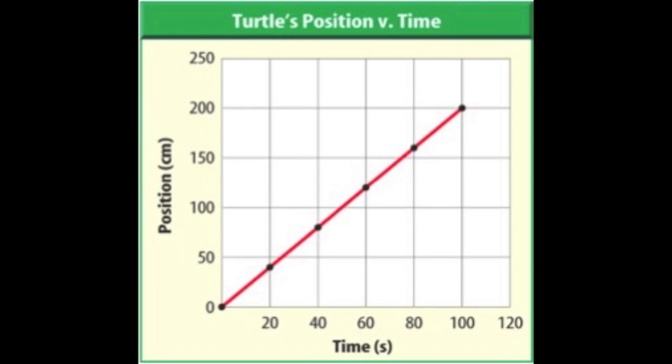The first thing you want to do when you look at any graph is look at the title, because the title will give you the main idea of what the graph is about. This one, for example, is a turtle's position versus time. The time is on the x-axis at the bottom, and you can see that as time is passing, the turtle is getting farther away and the units are centimeters.